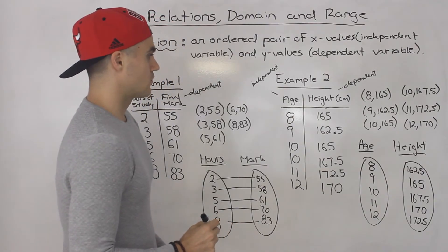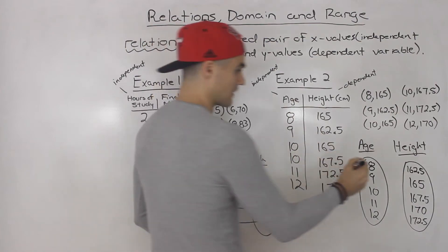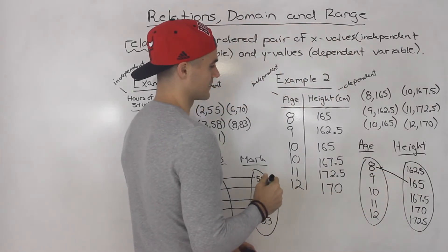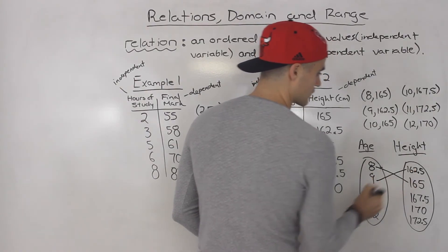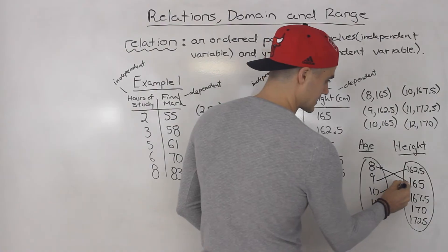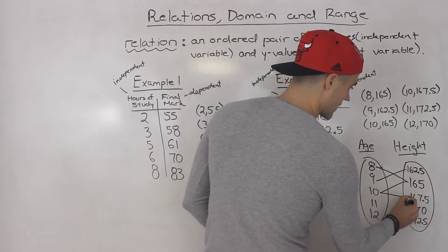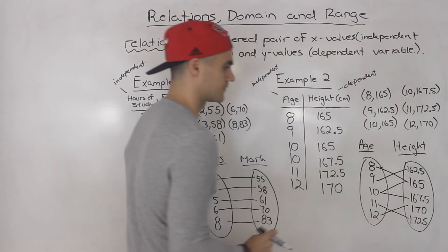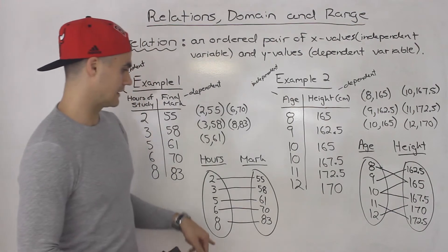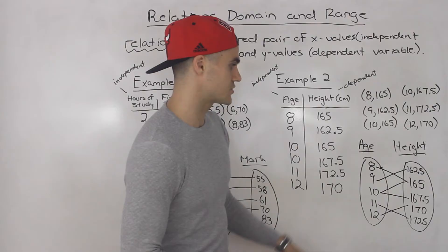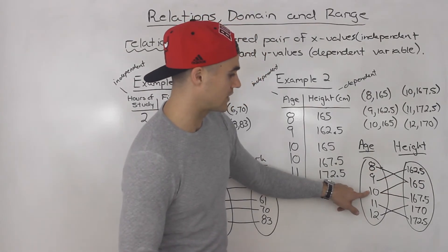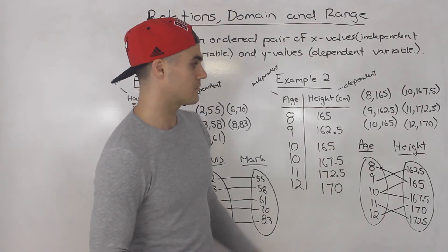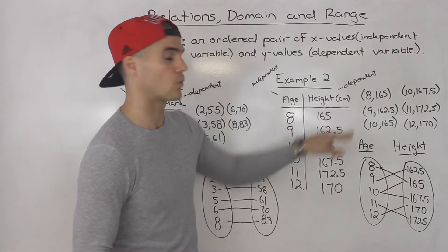Now we just match: 8→165, 9→162.5, 10→165, 10→167.5, 11→172.5, 12→170. Notice how this mapping diagram looks more complex than example one. This one had just straight lines, but here you can have lines that cross, lines coming to the same dependent variable, or the same independent variable going to multiple dependent variables. That's how you go from a table to a mapping diagram, and you should also be able to go from a mapping diagram to a table or coordinate form.